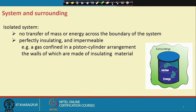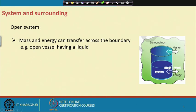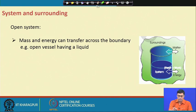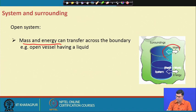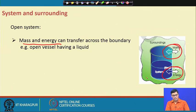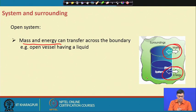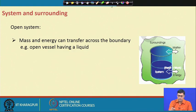In an open system, both mass and energy can be transferred between the system and the surroundings. An example of an open system is an open vessel containing a liquid.